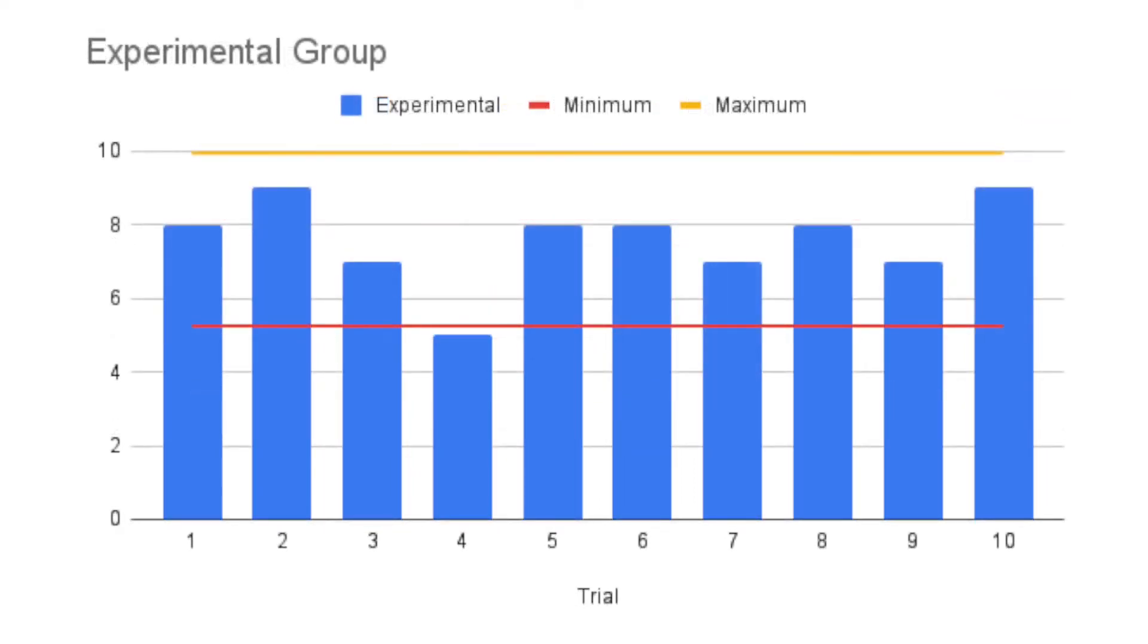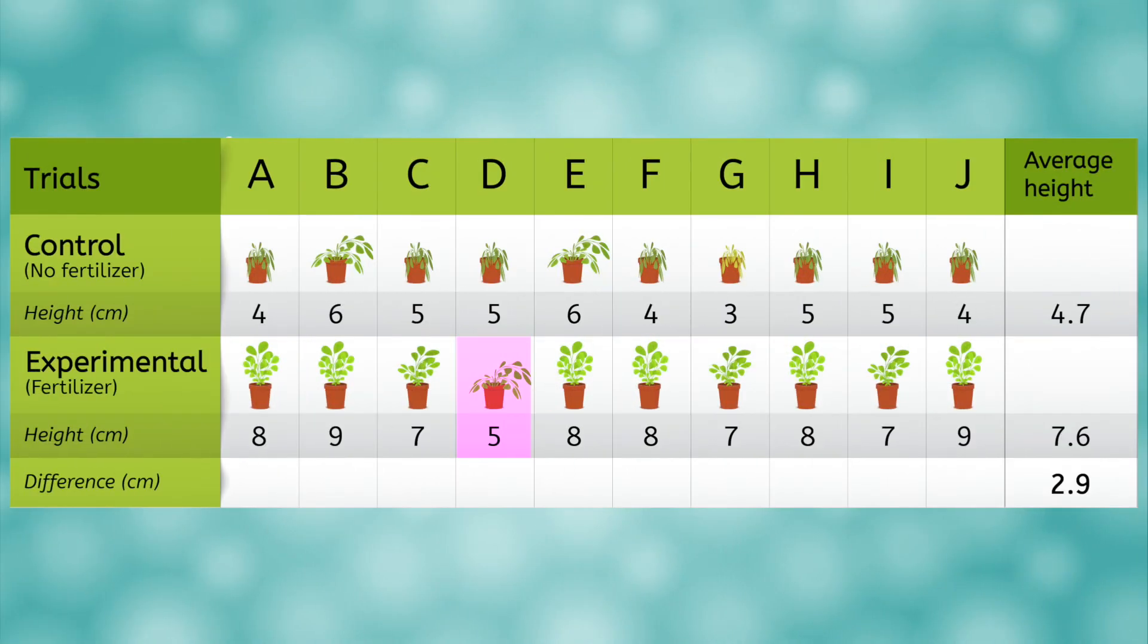We can make the same graph for our experimental group. Oh no, one of our values is below the minimum. It's an outlier! What do we do? Is all hope of me getting rich from this fertilizer dashed? Well, maybe not. It is only one value after all, and it is very close to the line. It was our one poor plant that only grew to 5 cm, even with fertilizer.